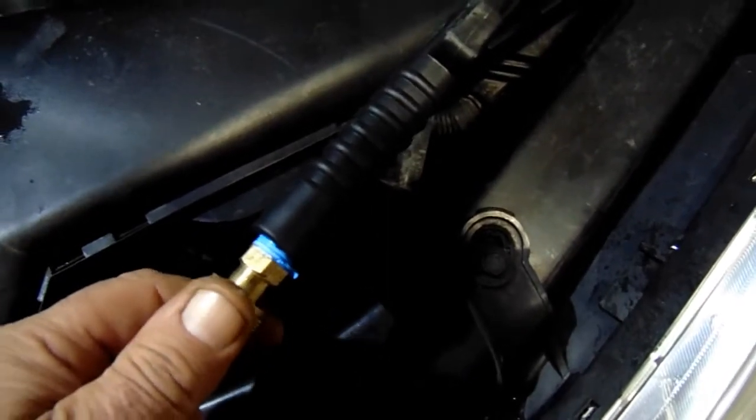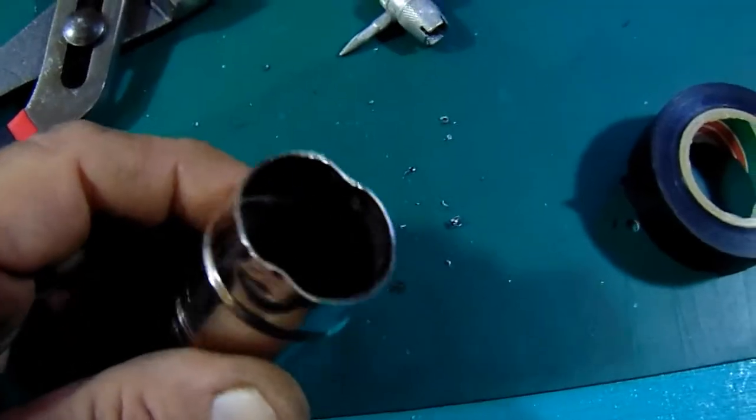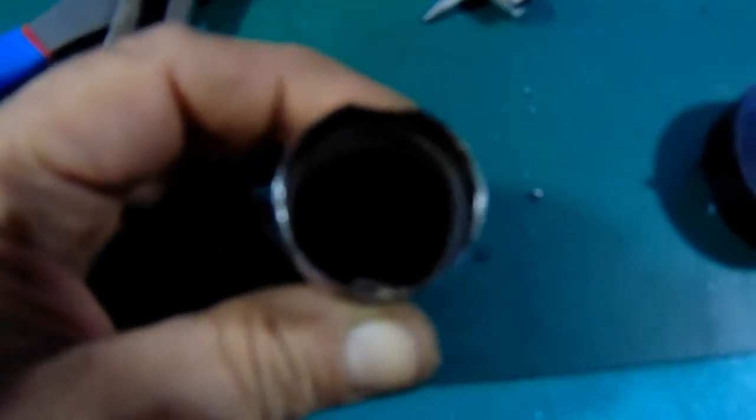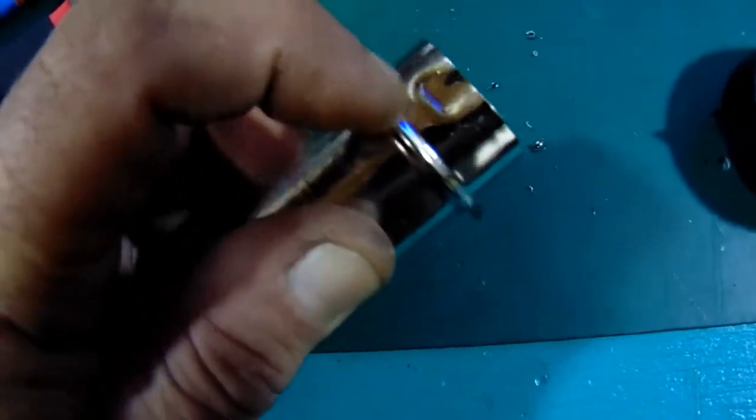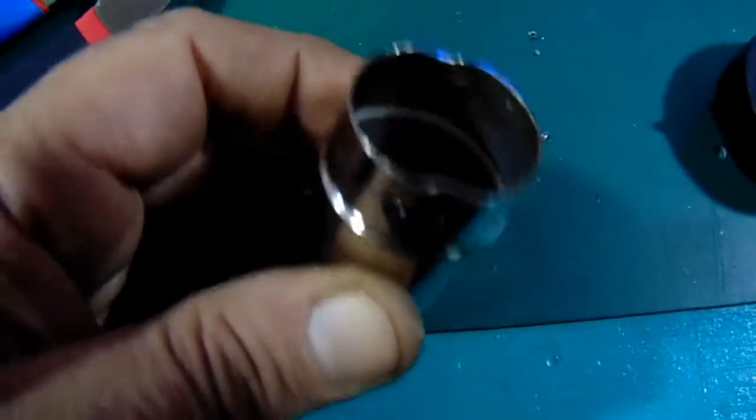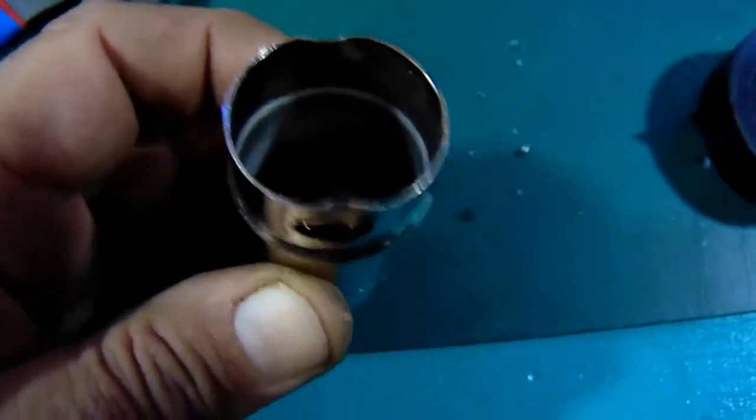Okay, I ran into a little problem here. Since this is not exactly round, it has these dimples in there to lock the cover on the tool. I'm going to try to straighten them out and see if that helps.